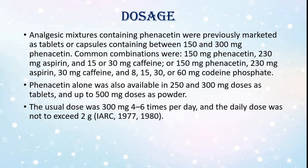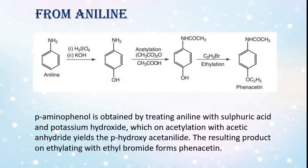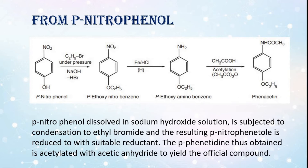Synthesis: From aniline, p-aminophenol is obtained by treating aniline with sulfuric acid and potassium hydroxide, which on acetylation with acetic anhydride yields p-hydroxyacetanilide. The resulting product on ethylation with ethyl bromide forms phenacetin. From p-nitrophenol: p-nitrophenol dissolved in sodium hydroxide solution is subjected to condensation with ethyl bromide, and the resulting p-nitrophenetole is reduced with a suitable reductant. The p-phenetidine thus obtained is acetylated with acetic anhydride to yield the official compound.